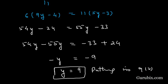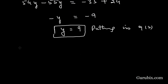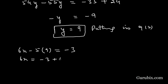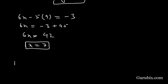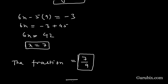Substituting y = 9 into equation number 2: 6x − 5(9) = −3, so 6x = −3 + 45, giving 6x = 42, which means x = 7. Therefore the fraction is 7 over 9. This is the solution of the question. Thank you.